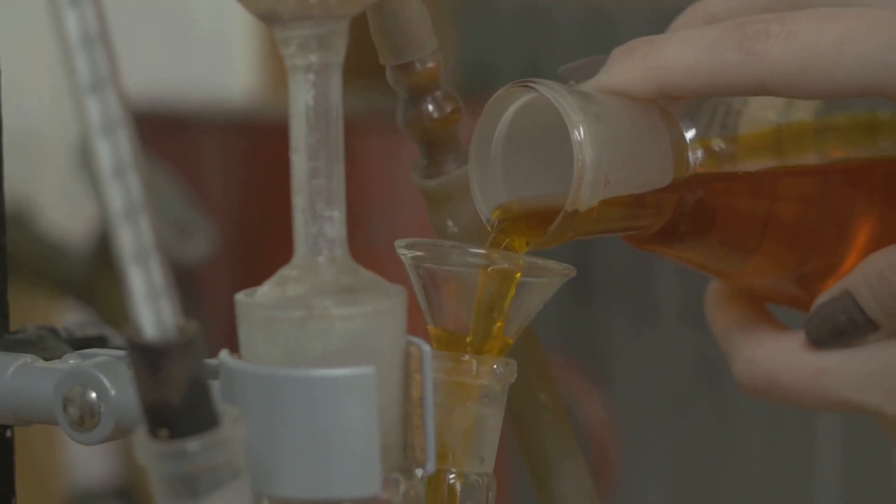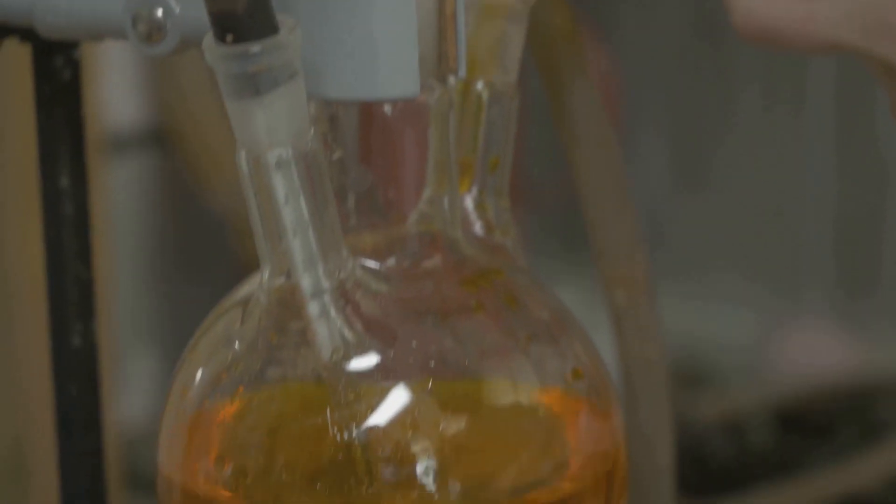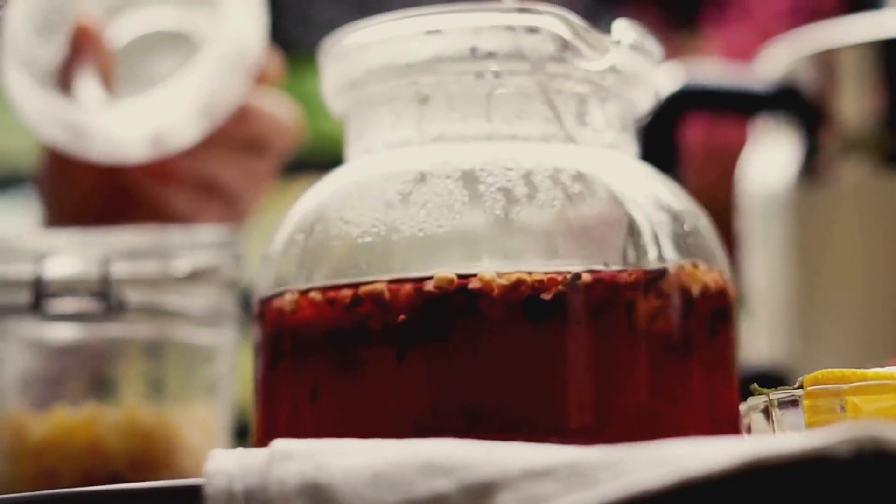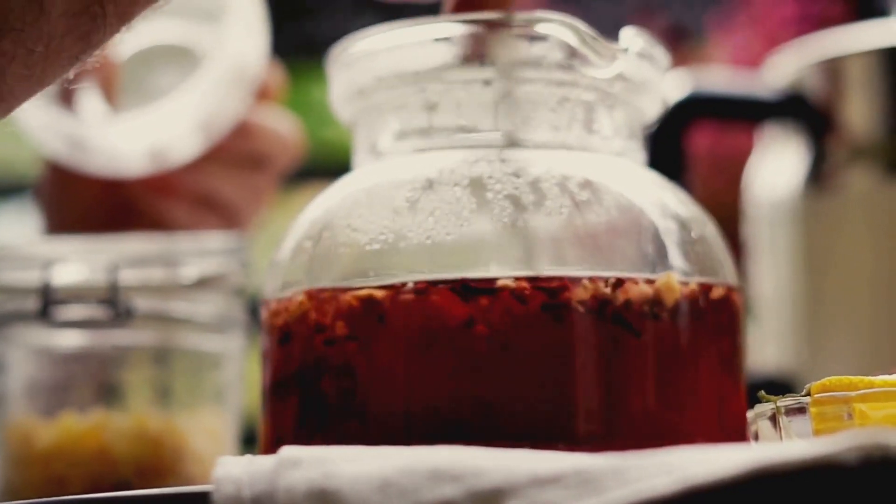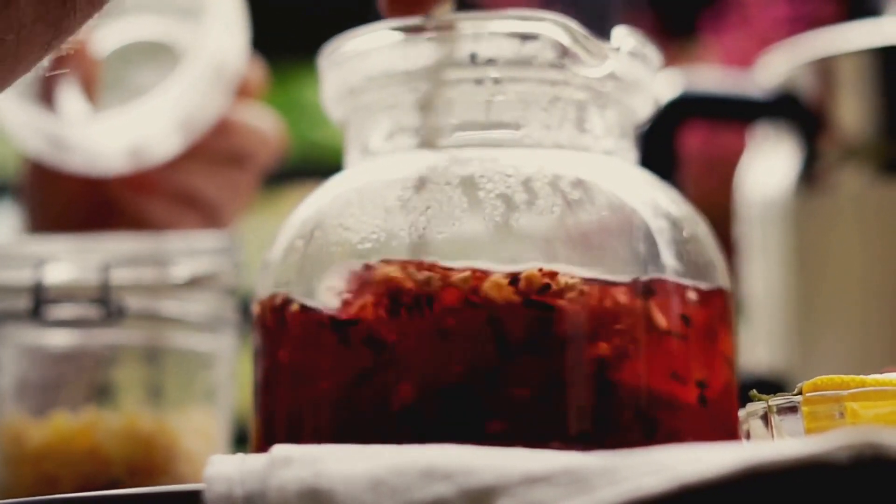We carefully pour the hot liquid into the glass bottle, making sure not to spill a drop. This step requires a steady hand and a keen eye to ensure the right amount of liquid is used. Then we attach the heating element to the bottom of the bottle and wire it to the base. This element is crucial as it heats the liquid, causing the mesmerizing lava effect.